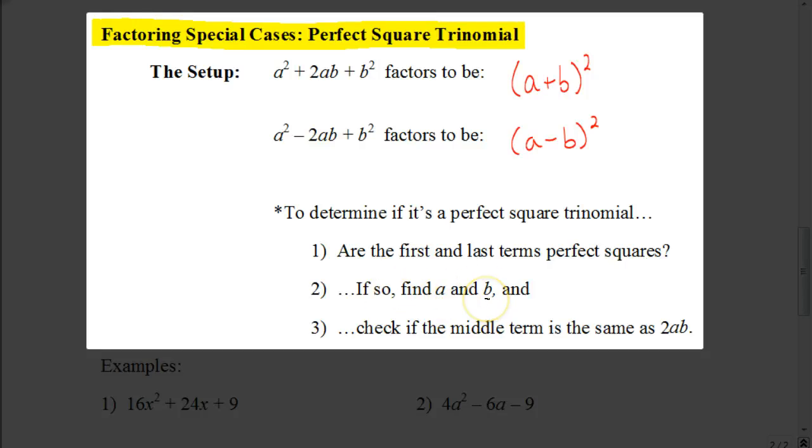the next step to see if it's a perfect square trinomial is to check to see if the middle term is the same as 2 times a times b. Now, we don't care about whether it's a plus or minus. We just want to figure out, is it the same as 2 times a times b?